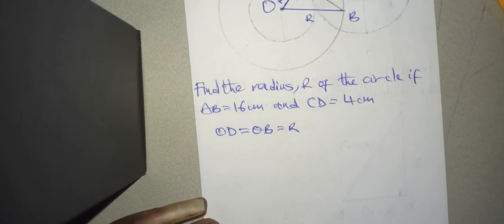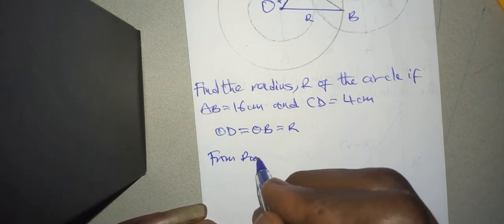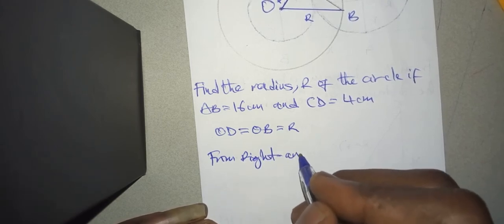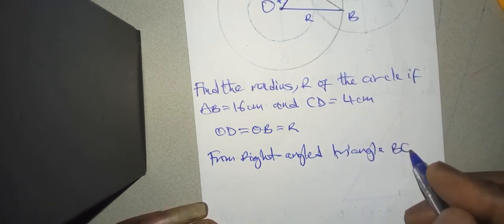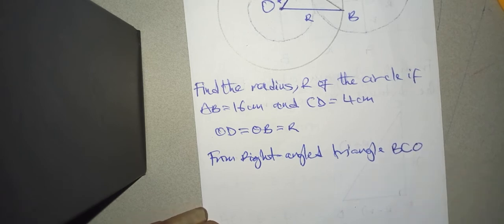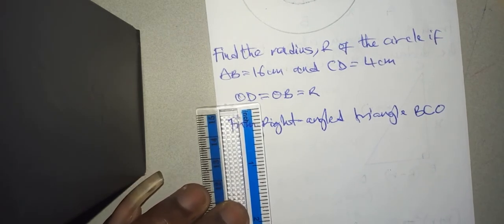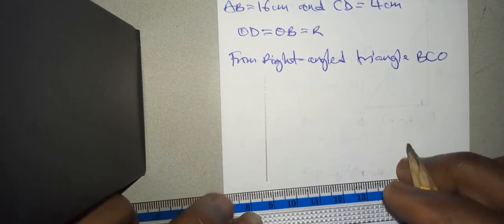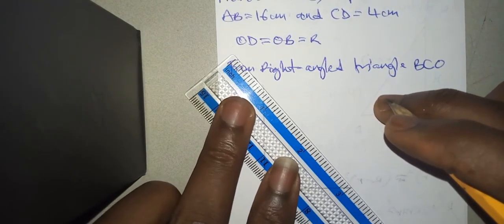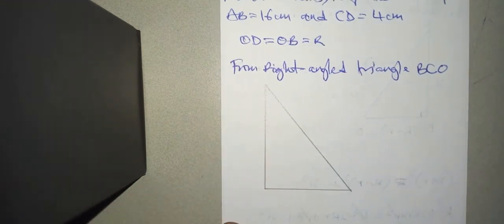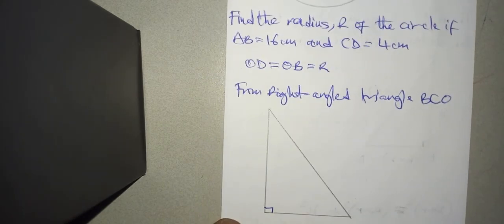So from right angled triangle BCO, let me draw the right angle triangle down here. I have my right angle here, and if you look at the problem, that point will be C.